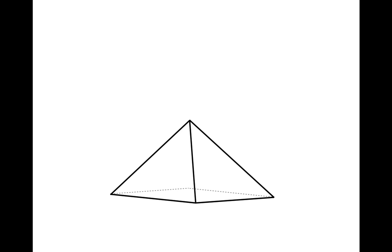That means the pyramid has a square base and the apex is directly above the center of the base. For this example, let's call the side length of the square base B and the height of the pyramid H.